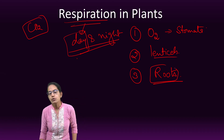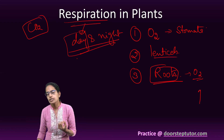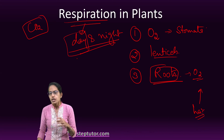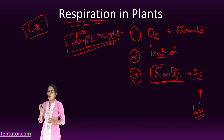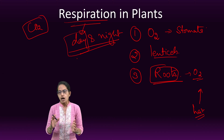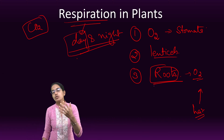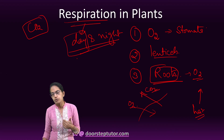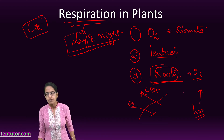Roots absorb oxygen from soil particles, which diffuses into the root hairs and other parts of the root. Oxygen diffuses into the cell through the stomata, and carbon dioxide diffuses from the cell through the stomata to the exterior. So oxygen diffuses in through the stomata and carbon dioxide diffuses out through the stomata.